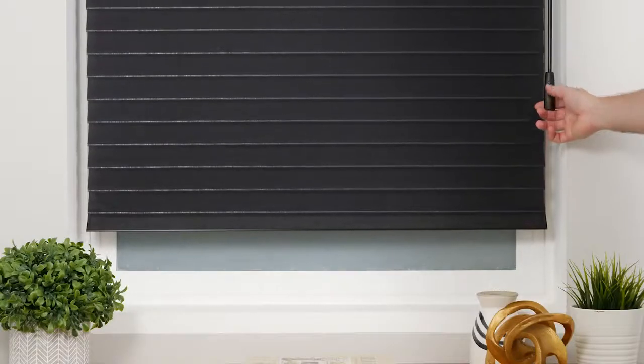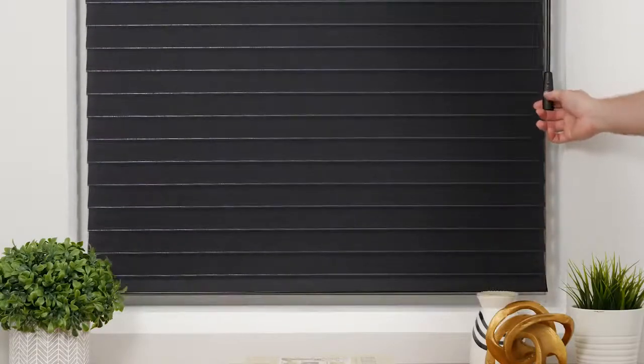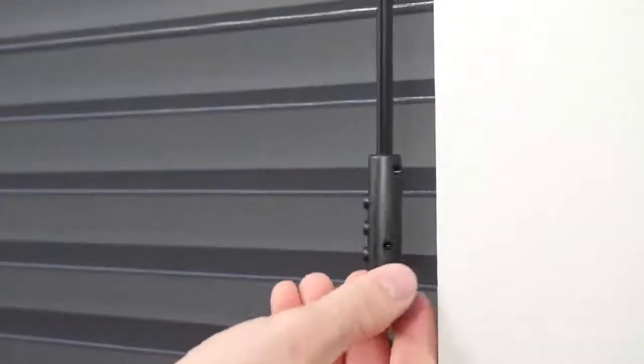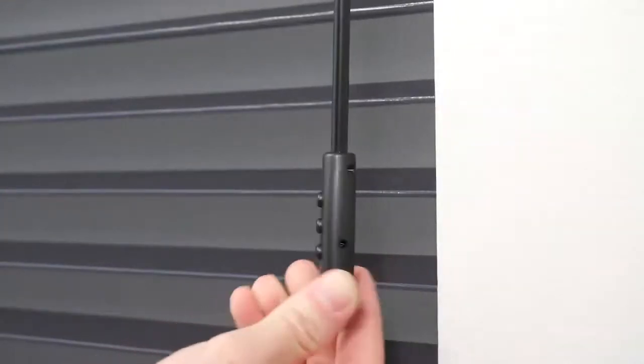Now press the down button to lower the shade until it is close to the desired lower limit, and then press stop. Adjust the position of the shade as needed. To save the lower limit, press the setting button until you hear a beep.